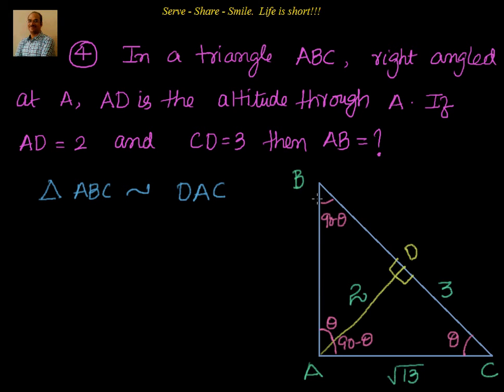In ABC, I go from A to B, 90 to 90 minus theta, then from B to C, that's 90 minus theta to theta. Similarly, DAC: I start from 90, go to 90 minus theta, then to theta. These triangles are similar to each other by AA similarity.